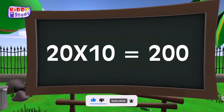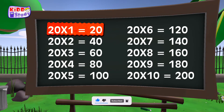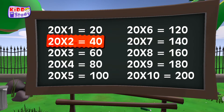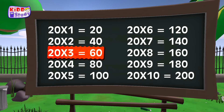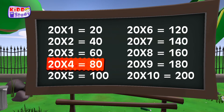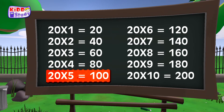Once again children: 20 ones are 20, 20 twos are 40, 20 threes are 60, 20 fours are 80, 20 fives are 100.